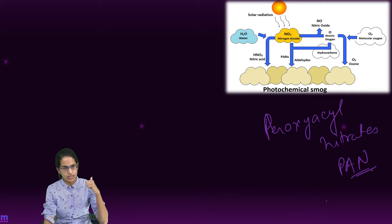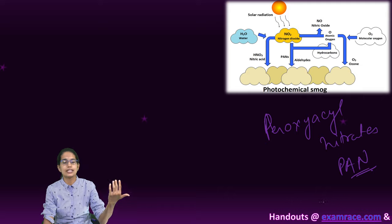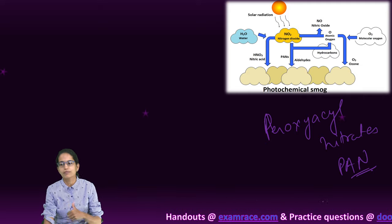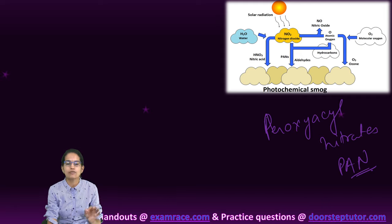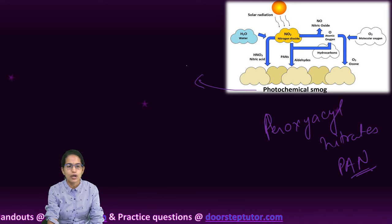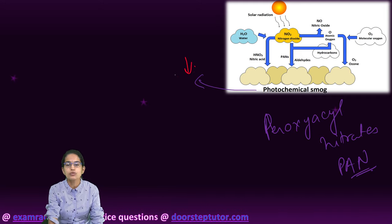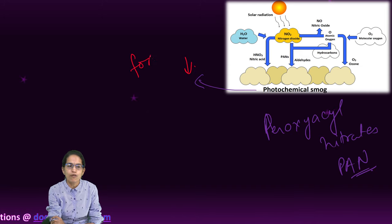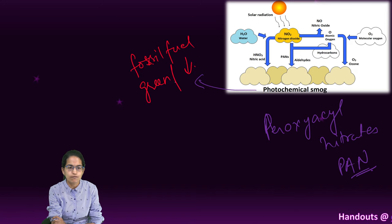Photochemical smog affects the eyes, causes eye irritation, affects visibility, and causes respiratory problems. The most obvious way to minimize this is by eliminating the use of fossil fuels and moving towards greener sources of energy, or green fuels.